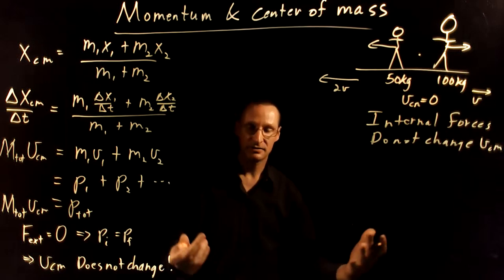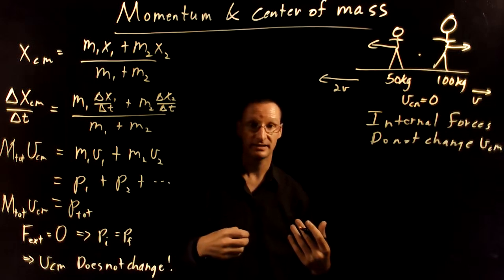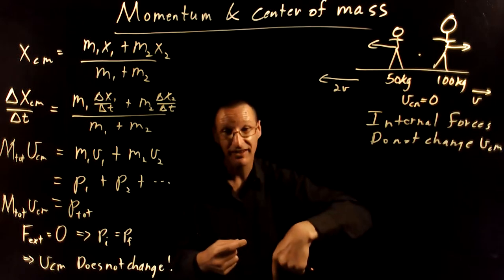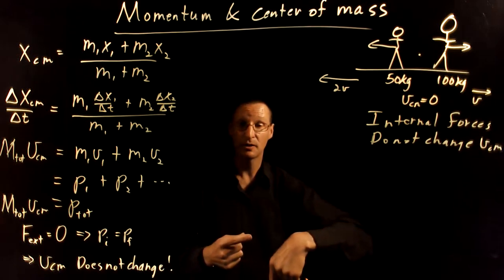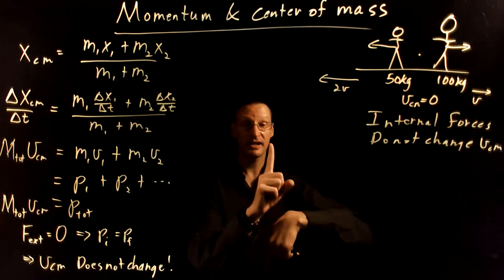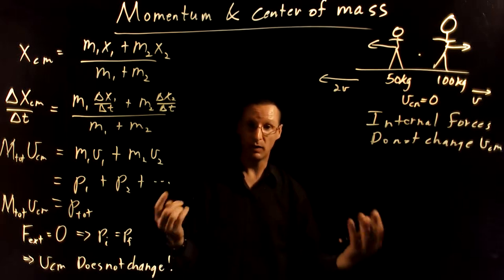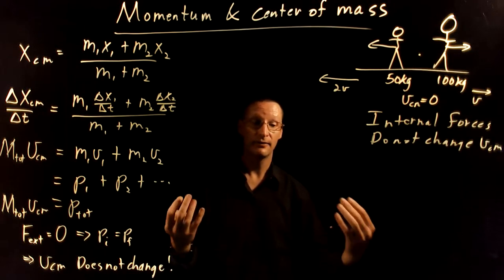Instead, we need an external force to change our center of mass velocity. So what we do is we push down on the ground, which is external to our body. The ground pushes back up on us, puts an external force on us. And that is how we change our center of mass velocity.